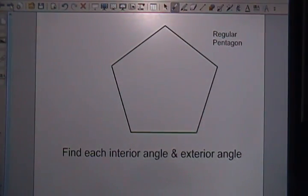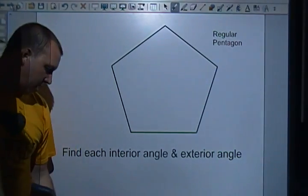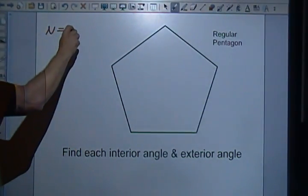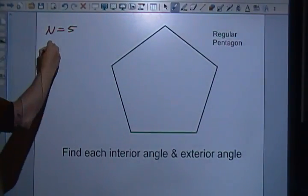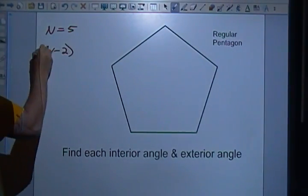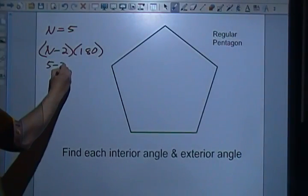In this regular pentagon, find each interior angle and exterior angle. Well, number of sides - there are five lines, there are five of them. So if we plug that into the formula, n minus 2 times 180 would be 5 minus 2 times 180.